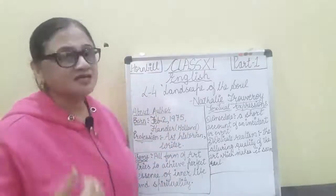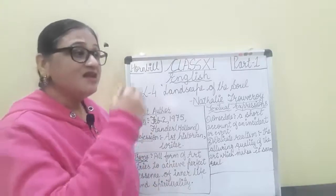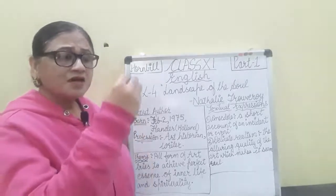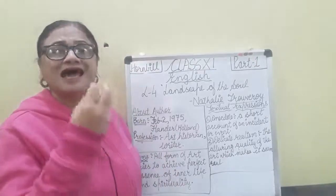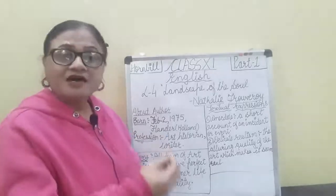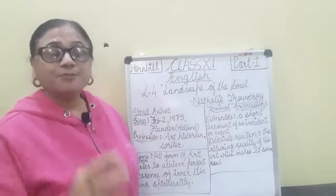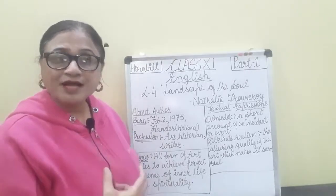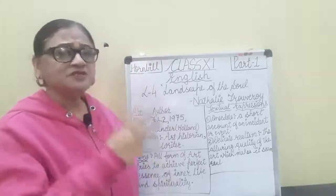Let us understand the difference between European and Chinese art. European art, also known as Western art, involves learning things and then copying them. Chinese artists also learn and copy, but they put all the essence of soul, spiritual essence, and mind essence into the painting. Western art requires only your naked eye to see and judge it as it is. But Chinese painting requires the balance of soul energy, mind energy, and physical energy to understand the real art form.